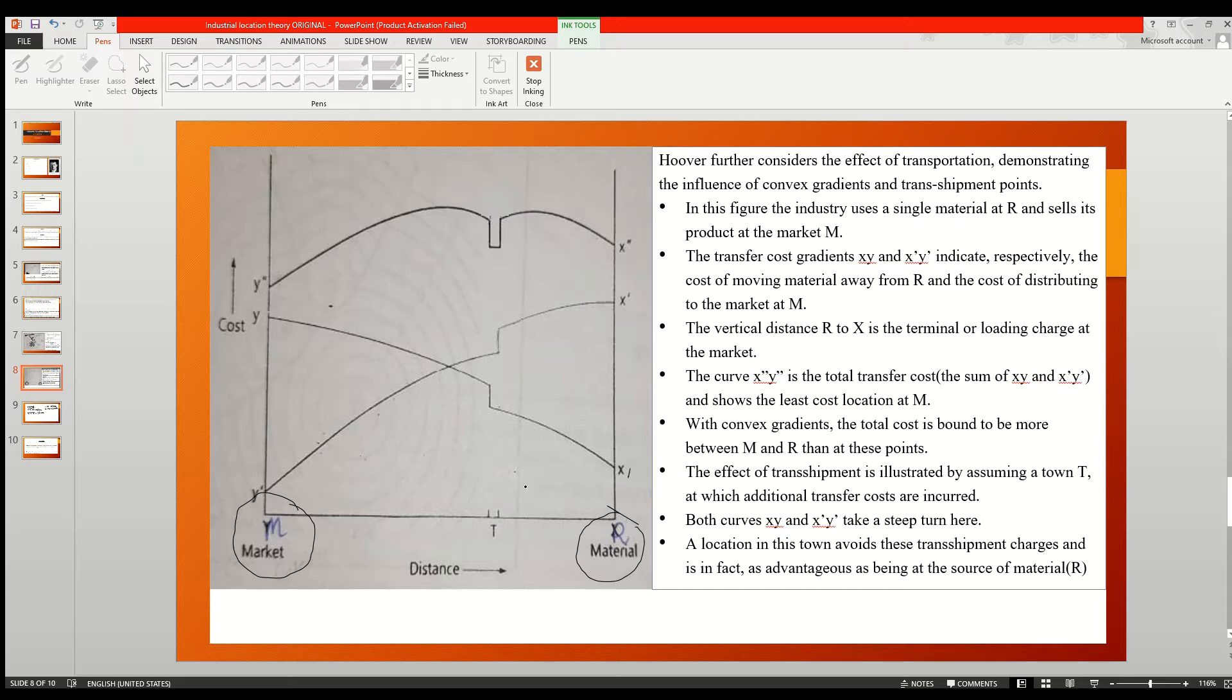Then X and Y will indicate the cost of moving material away from the point R towards M. Cost of moving material away means simply the transport cost.